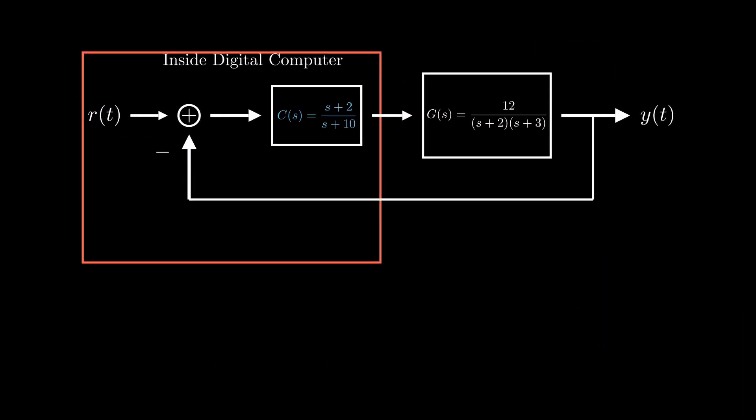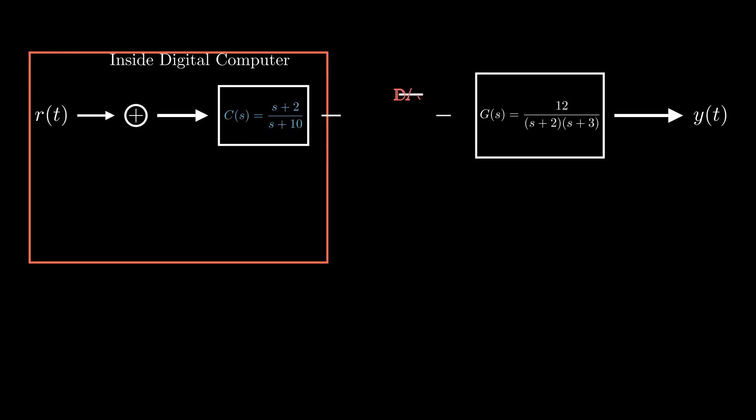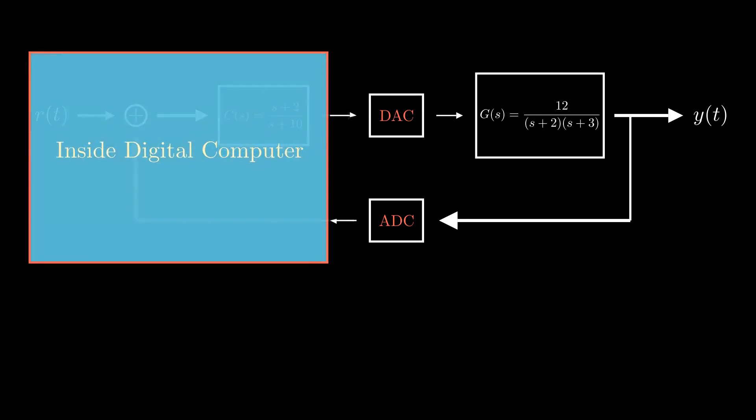Returning back to our system representation, we need a digital to analog converter to convert the digital signal coming out of the computer into analog form, and an analog to digital converter to convert signals back into digital form. For now, let's keep aside what's happening inside the digital computer, and focus on what's happening outside it.